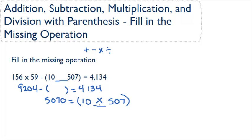So, let's try multiplication. 10 times 507 is, in fact, 5,070. So, we can fill into our original equation the operation of multiplication.